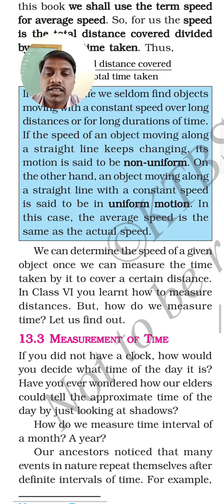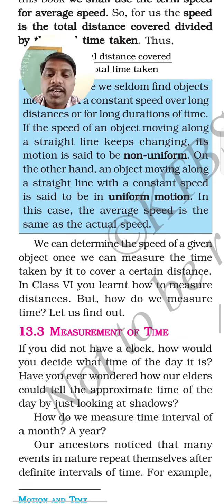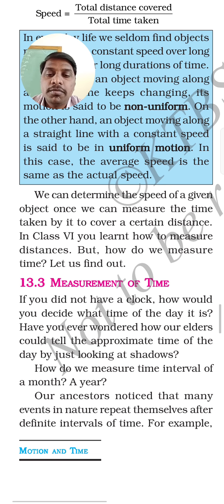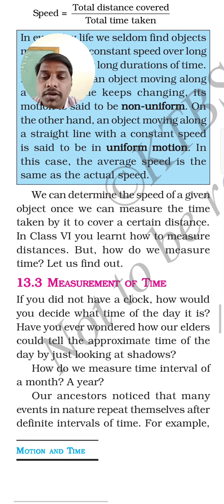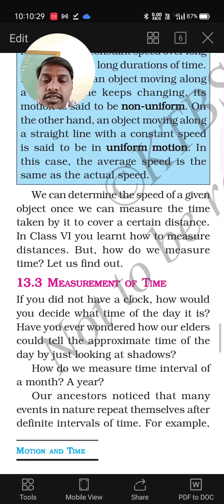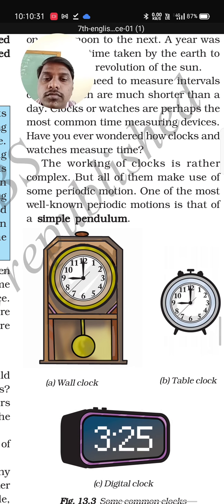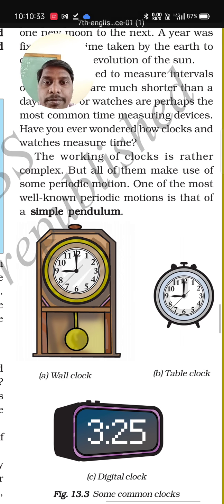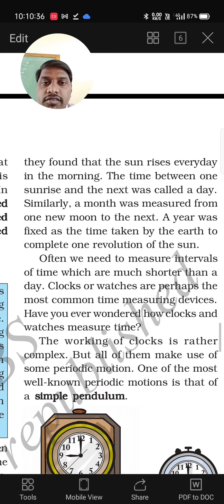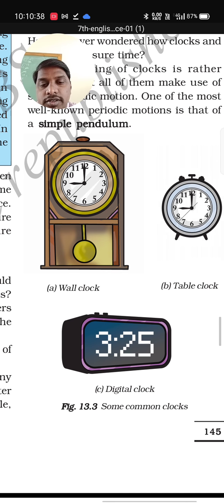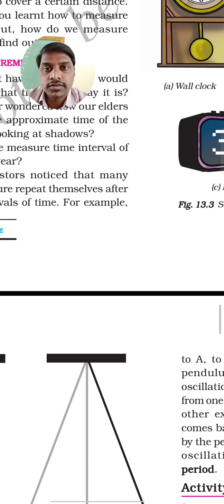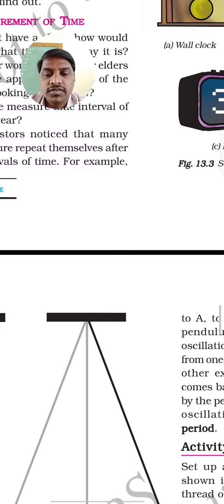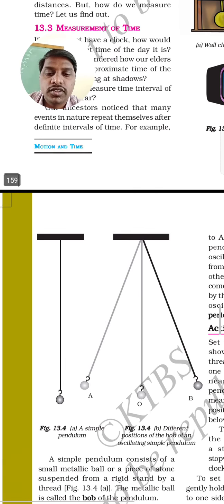We can determine the speed of an object once we measure the time taken by it to cover a certain distance. In class 6, you learnt how to measure distance. Time is measured in seconds, minutes, hours, months, or years using instruments like wall clocks, time clocks, and digital clocks.